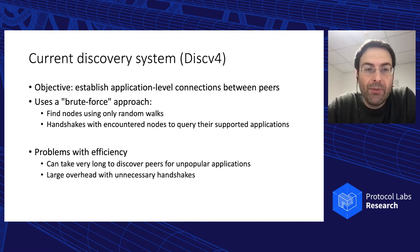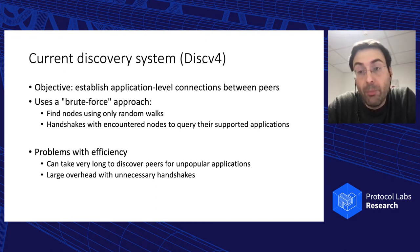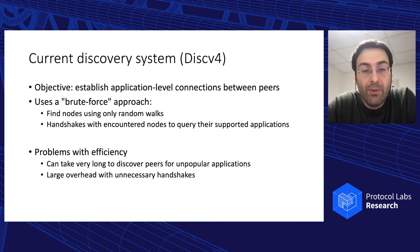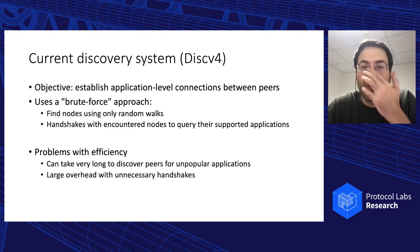This random brute-force approach is problematic for two reasons: it's slow for peers to find others for unpopular applications where there are not too many peers, and there are unnecessary handshakes between nodes that are not even running the same application.